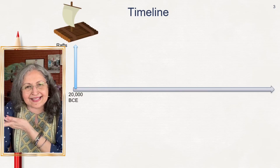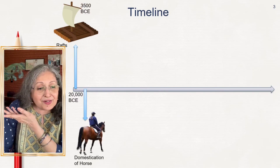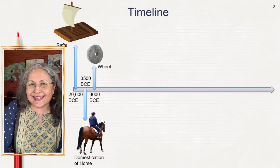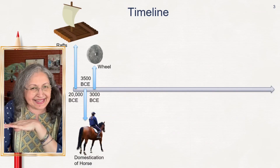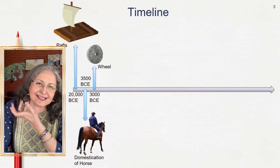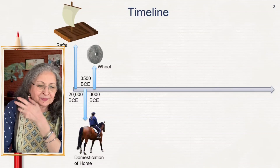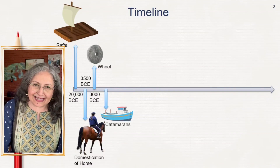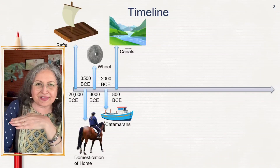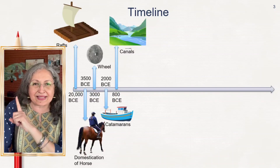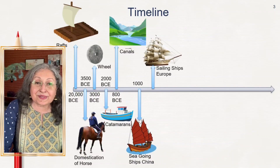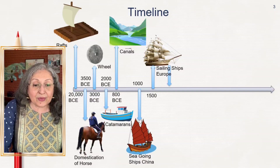First we domesticated the horse, then we invented the wheel sometime around 3000 BCE — not in India, but in Mesopotamia, though it was already present in Indus Valley clay carts. Then of course there were catamarans and canals. Moving to 800 BCE, China started building sailing ships and Europe followed suit later.